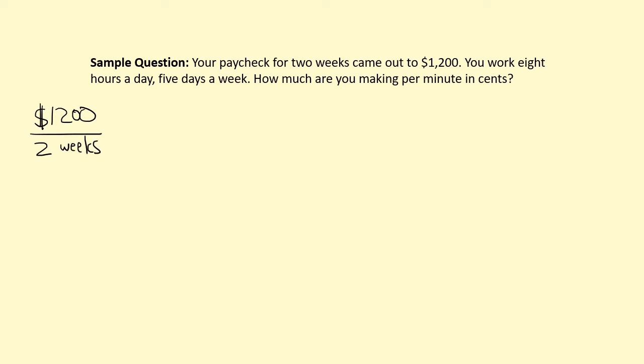Continuing to read, it says you work eight hours a day, so that is eight hours per one day. You might say there are 24 hours in a day, and there absolutely are, but in this problem one day represents eight hours of work. So in the context of this problem, a day means eight hours of work. We also see that you work five days per one week, so that gives us three ratios.